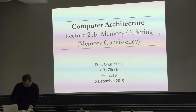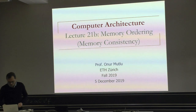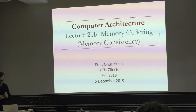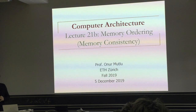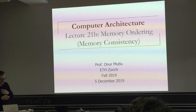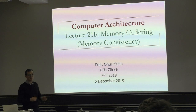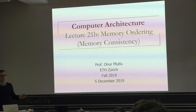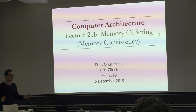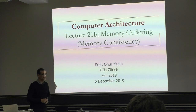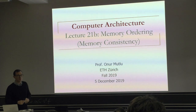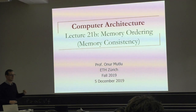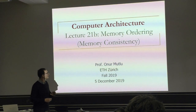In this second part of the lecture, we're going to talk about memory ordering. This is an important topic for correctness of any kind of program. Ordering of operations in general is the fundamental part. In particular, memory ordering becomes problematic if you have a shared memory multiprocessor — specifically tightly coupled shared memory multiprocessors.